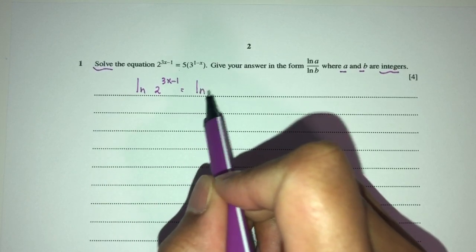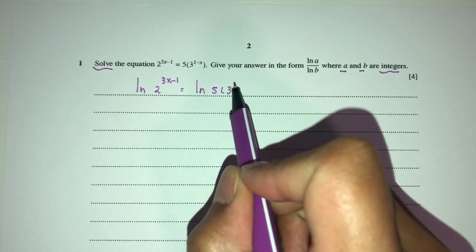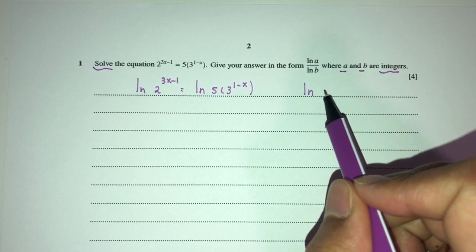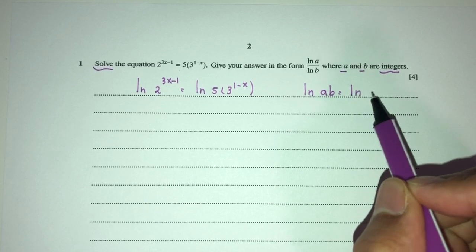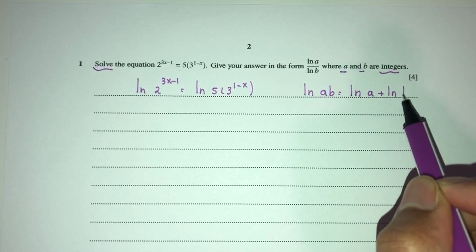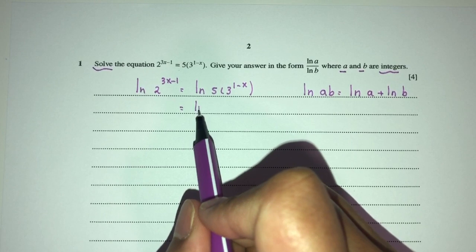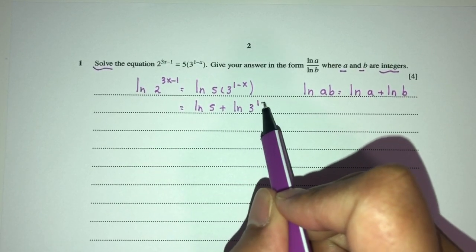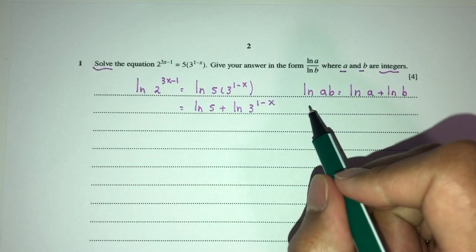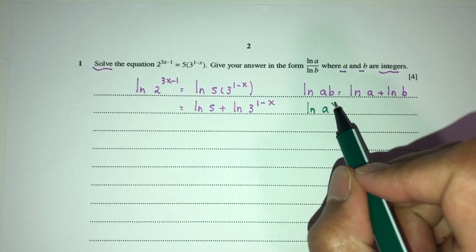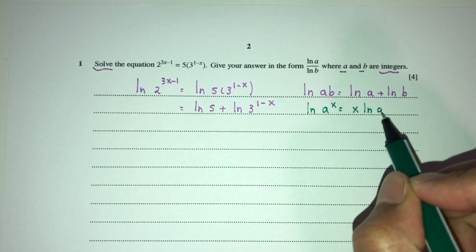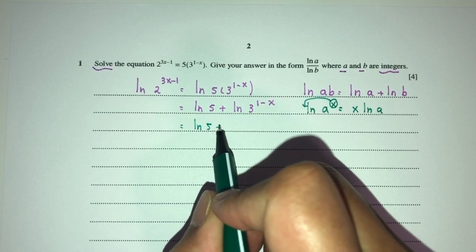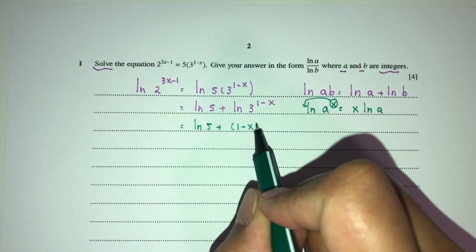This will be ln over here times this one. Now, we should know that ln of ab equals ln of a plus ln of b. So here we have ln of 5 plus ln of this one. We should also know that ln of a to the power x is the same as x ln of a — we can send the power in front. So that will be ln of 5 plus (1 minus x) ln of 3.